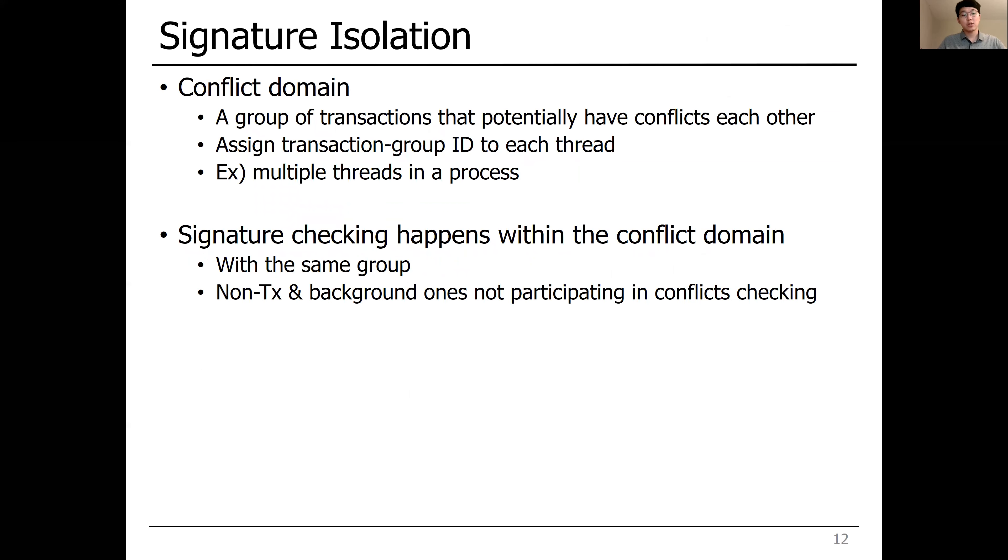To this end, UHTM presents a signature isolation technique. We first define the conflict domain, which is a group of transactions that potentially have conflicts with each other. Therefore, conflict checking happens only within a group. Threads in the same process fit this example.